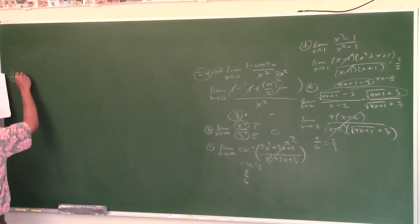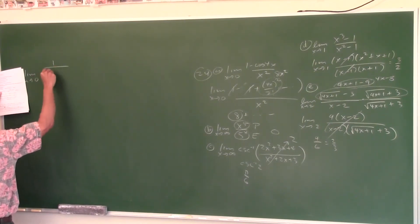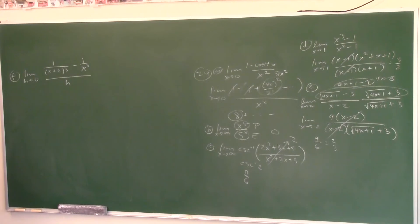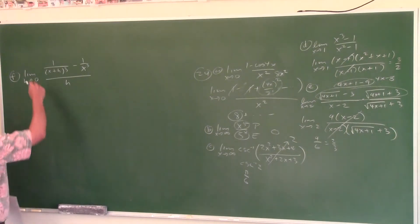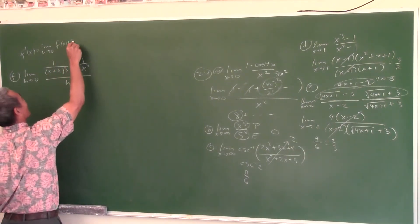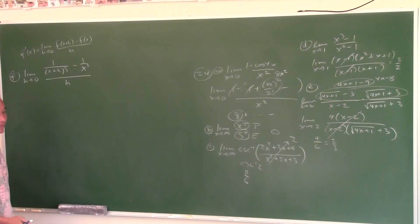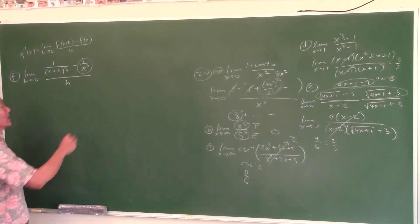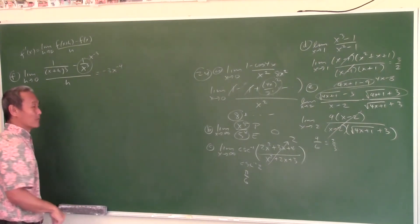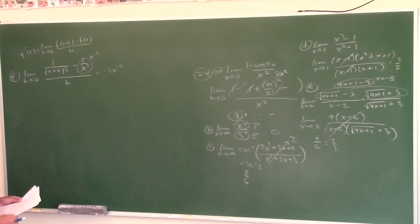Limit as h approaches 0 of (1/(x+h)³ − 1/x³)/h. Plugging in 0 gives 0/0. Recognize this is the definition of the derivative: f′(x) = lim(h→0) [f(x+h) − f(x)]/h. Here f(x) = 1/x³ = x^(−3). The derivative is simply −3x^(−4). You could also simplify algebraically and get the same answer.